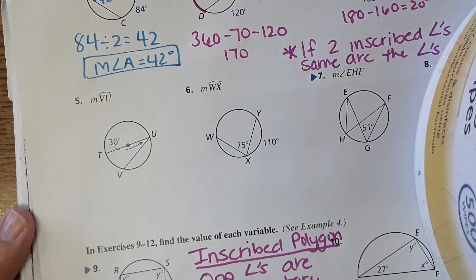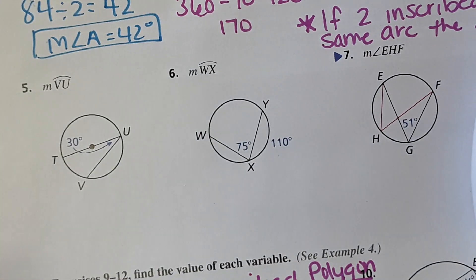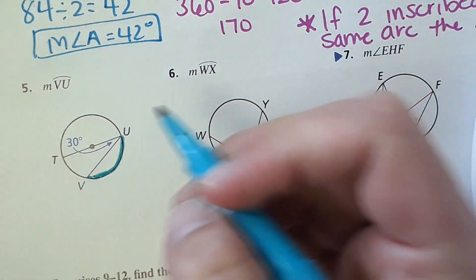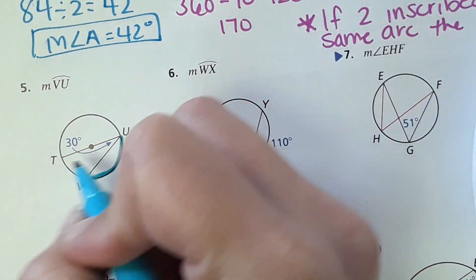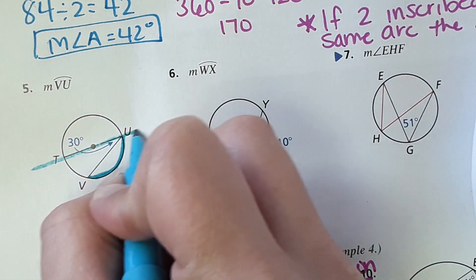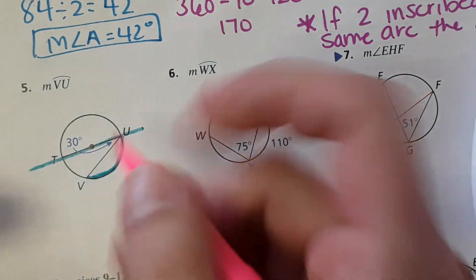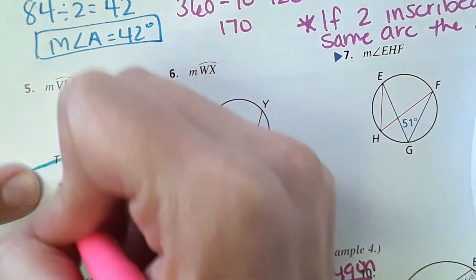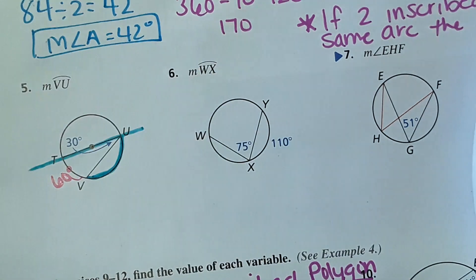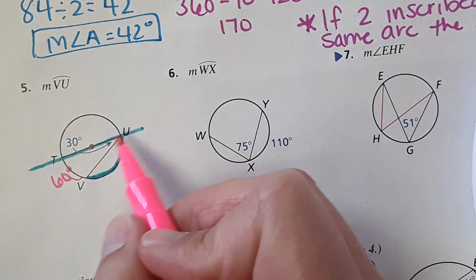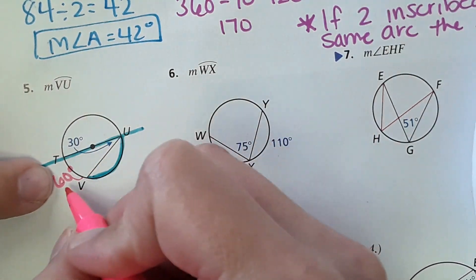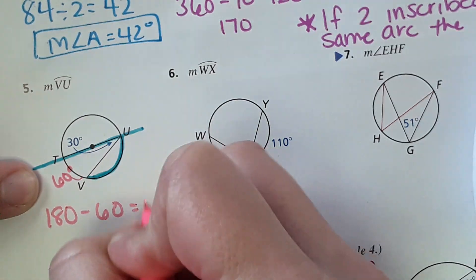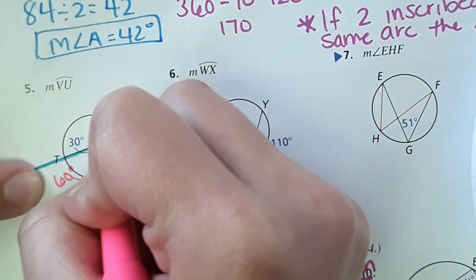Next, they want the measure of arc V. There's a diameter, and the inscribed angle is 30°. We multiply 30 by 2 to get 60° for one arc. Then, because it's a diameter, those two arcs add to 180°, so 180 minus 60 gives us 120. Arc V is 120 degrees.